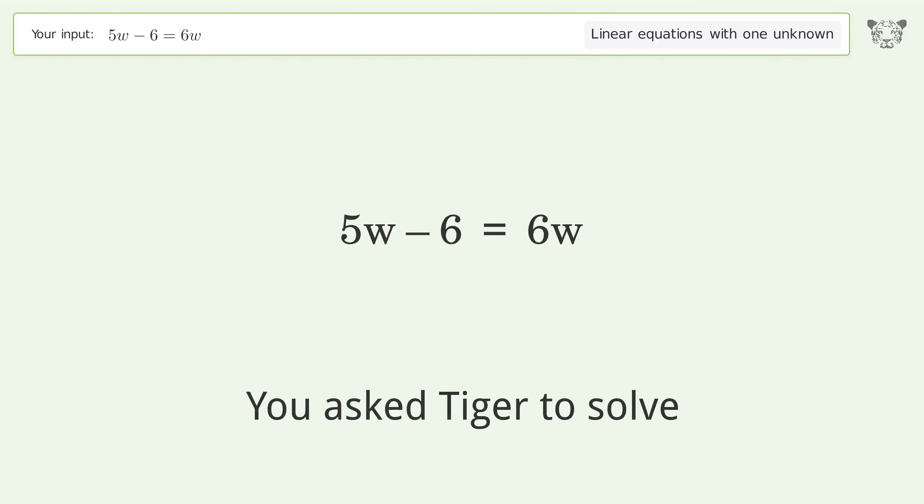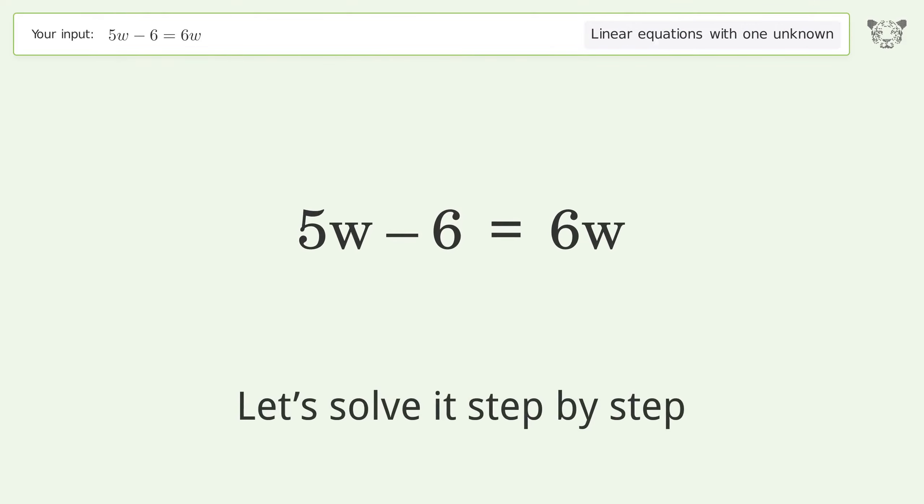You Asked Tiger to Solve. This deals with linear equations with one unknown. The final result is w equals negative 6. Let's solve it step by step.